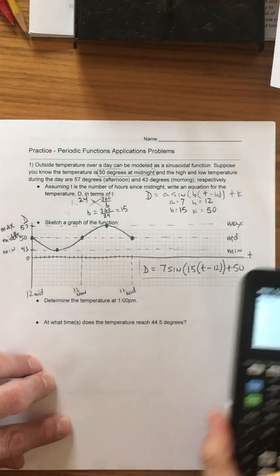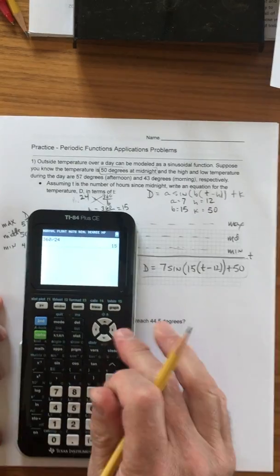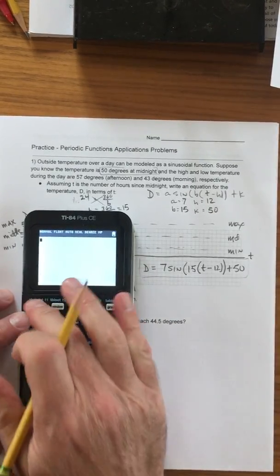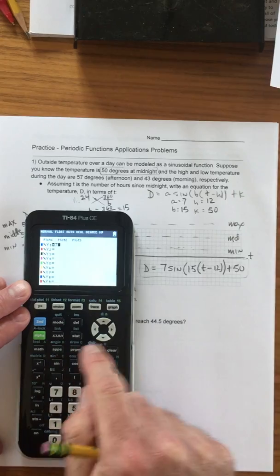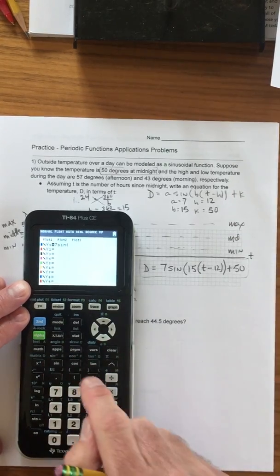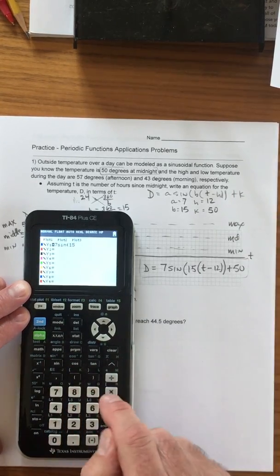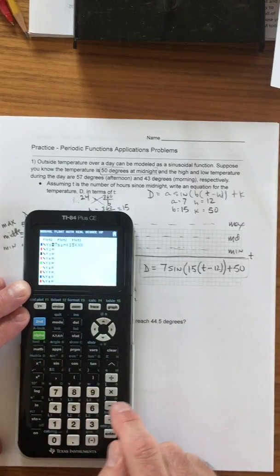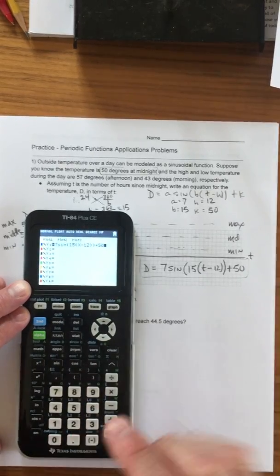So now let's do the following. Let's go to our calculator and Y equals, let's put this equation in. 7 sine 15 T minus 12 plus 50.